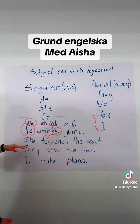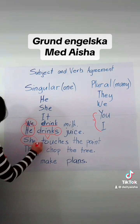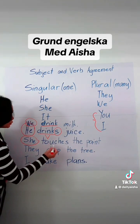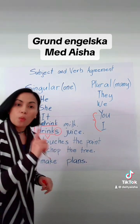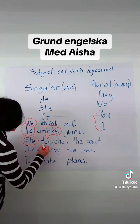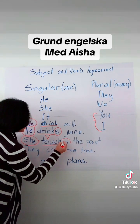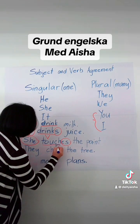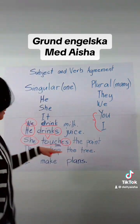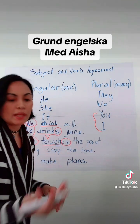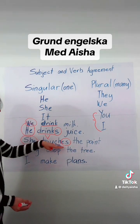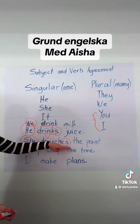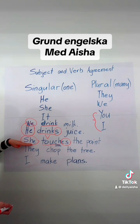Now here, she is your subject and that is a singular pronoun, so you must add s or es. Here you can see touch. Now you have es. Why? Because you have ch at the end. I will give you more rules on s and es later. So she touches the paint — touch becomes touches because your subject is singular.